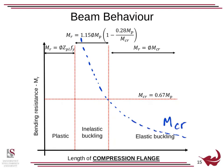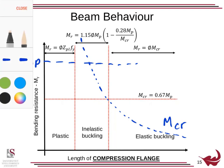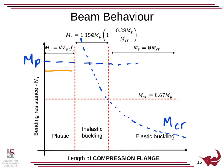We also have our plastic resistance MP, and a real beam is going to fall below that. A real beam will first experience plastic behavior, then transitions into inelastic buckling, and finally experiences elastic buckling here.